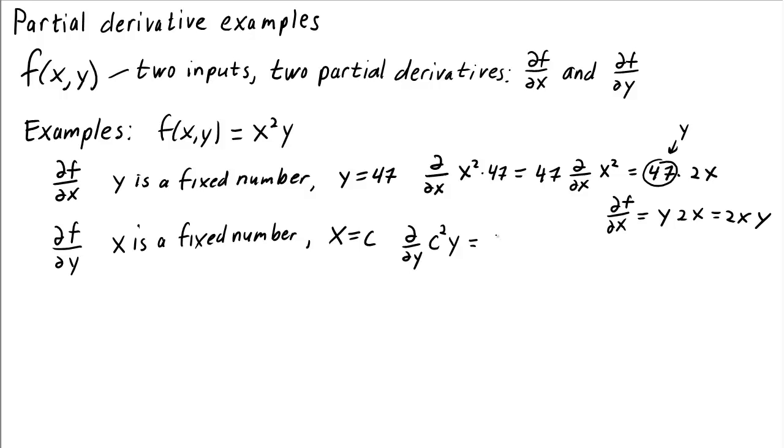Then d dy of f is d dy of c squared times y. Since c is just a number, we can pull it out of the derivative, pull the c squared out of the derivative. And we're left with c squared times the derivative of y, which is just 1. So the result is c squared, which we can remember is just x squared. We've determined that df dy is x squared.